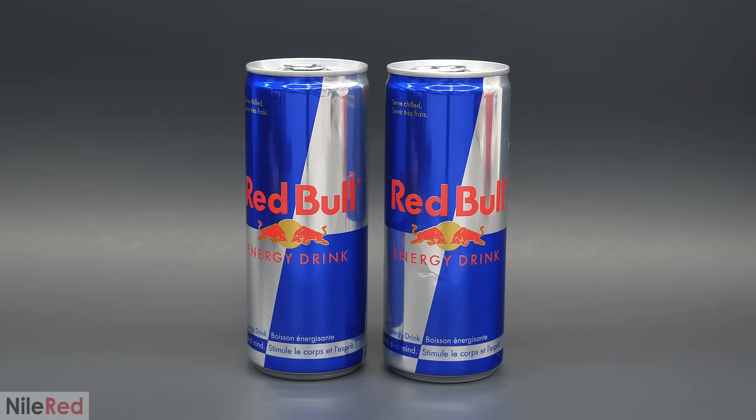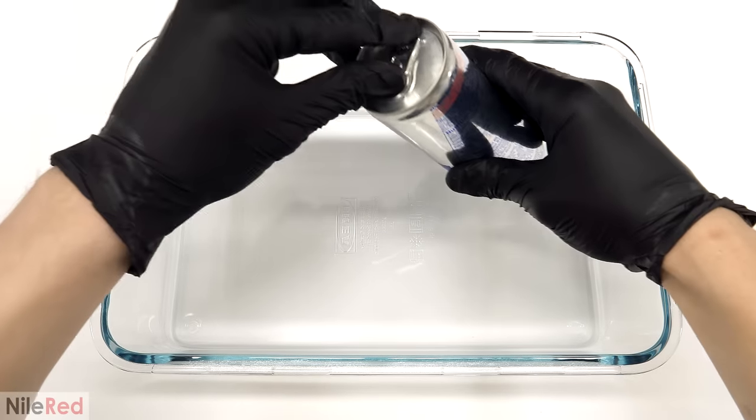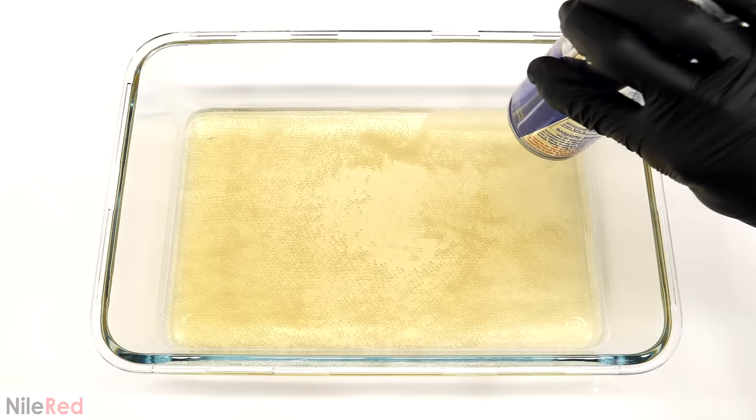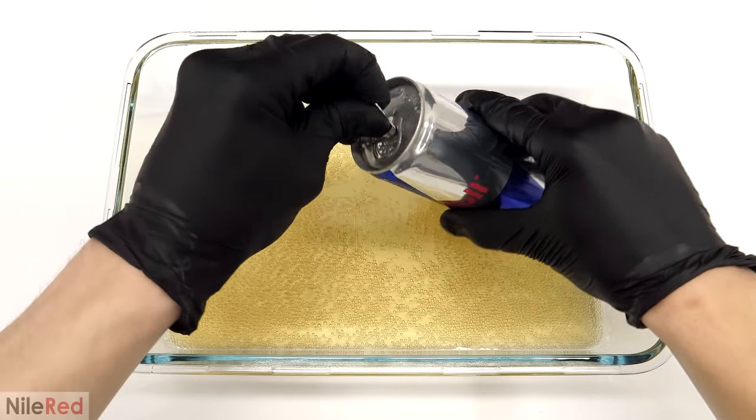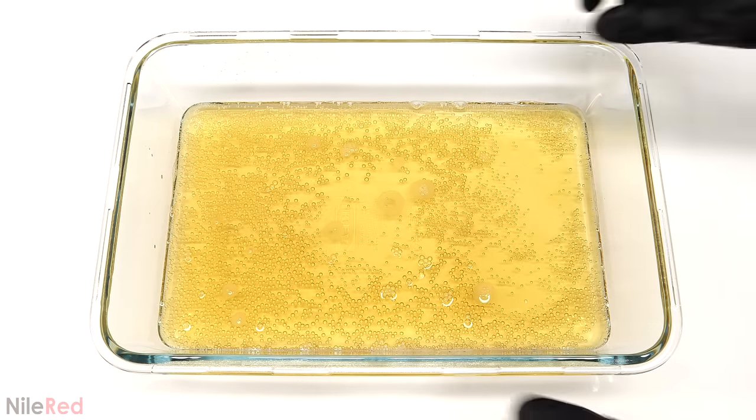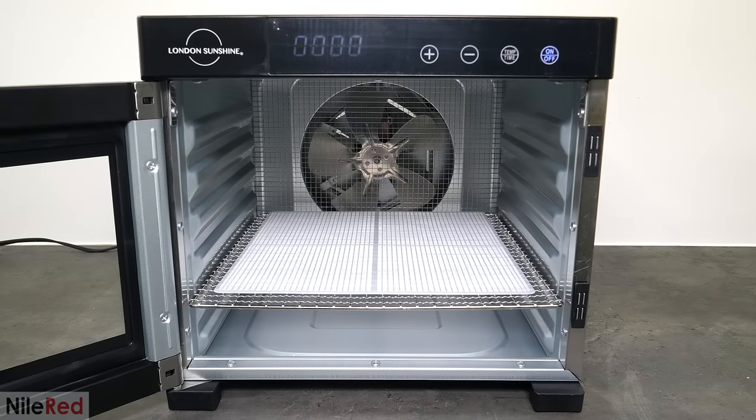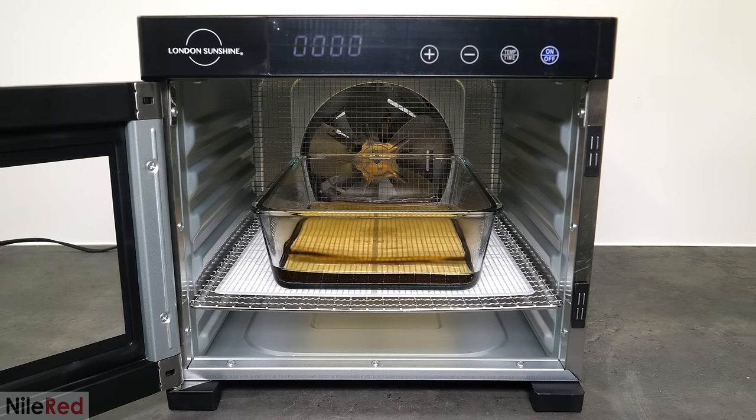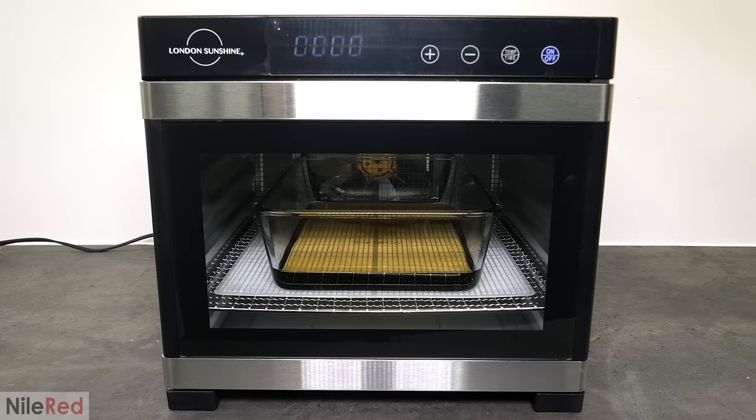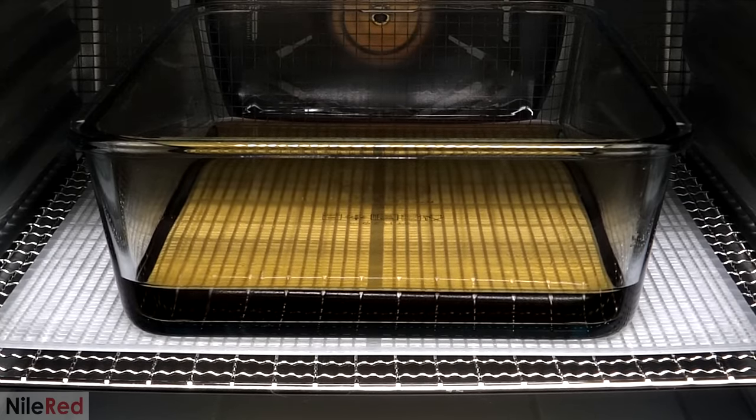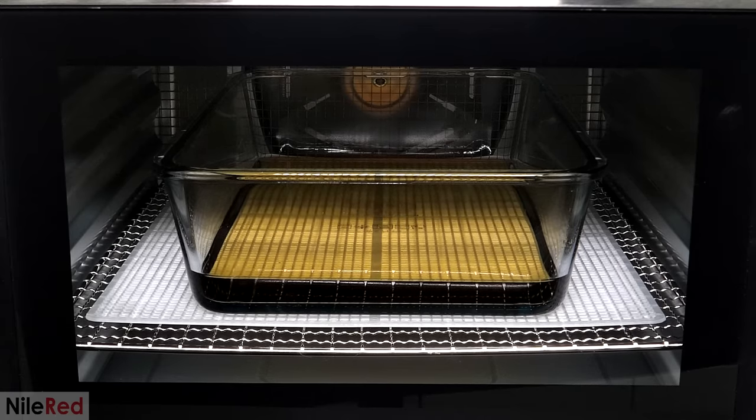To get this all started, I got a couple cans of Red Bull, and I emptied them into a dish. Then after that, I put it into a food desiccator that's normally meant to dry things, like fruits and vegetables. What I was trying to do here was get rid of most of the water to reduce the scale that I had to work on. This would just make things easier in general, and it would let me use less solvent for the extraction. At the same time, it would also get rid of all the carbonation, which would have made the extraction absolutely impossible.